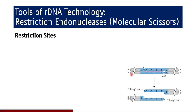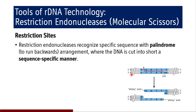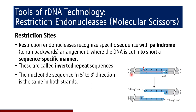Coming to restriction sites: restriction endonucleases recognize specific sequences called palindromic sequences, which are inverted repeat sequences. The nucleotide sequence in the 5' to 3' direction is the same in both strands. For example, in the DNA strand from 5' to 3' the sequence is AATT, and in the complementary strand reading 5' to 3' the same sequence AATT is also found. These palindromic sequences are the sites of action of restriction endonucleases.